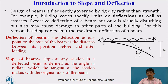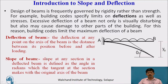Many building codes limit the maximum deflection of the beam. Deflection of the beam at any point on the axis of the beam is the distance between its position before and after loading. Initially the beam is straight; when load is applied it gets deflected, and this distance between initial and final position after loading is called deflection. Slope of the beam at any section in a deflected beam is defined as the angle in radians which the tangent at the section makes with the original axis of the beam.